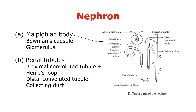As you can see in this diagram of nephrons, there is a cup-shaped structure present at the start of each nephron. This structure is called Bowman's capsule, in which capillaries enter and then exit. A bunch of capillaries present inside this Bowman's capsule is called the glomerulus. This Malpighian body continues in the form of renal tubules.